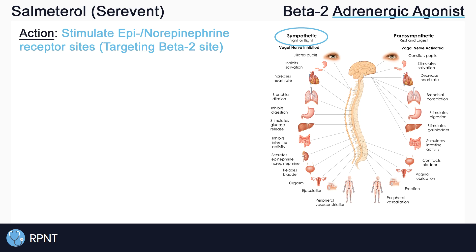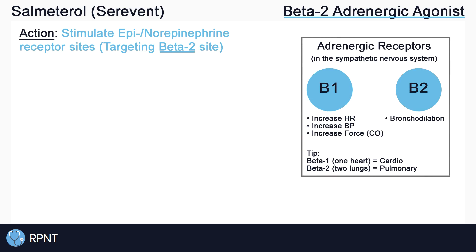The sympathetic nervous system is also known as the fight-or-flight nervous system and is responsible for actions like bronchodilation, increased heart rate, increased blood pressure, and decreased rest and digest functions. Specifically, salmeterol is a selective beta-2 agonist, meaning it stimulates beta-2 receptors, which mainly cause bronchodilation.